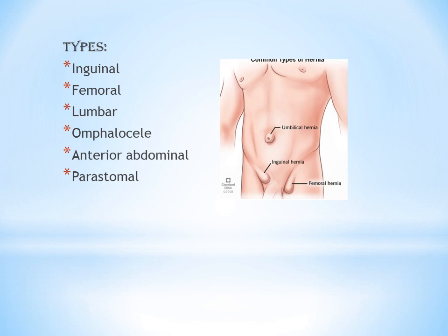Hernias are of different types. As mentioned in the CPT book, the types of hernia include inguinal hernia, femoral hernia, lumbar hernia, omphalocele, anterior abdominal, and parastomal. These are named based on their location — for example, inguinal hernia is located in the inguinal region, and umbilical hernia is similar to omphalocele.